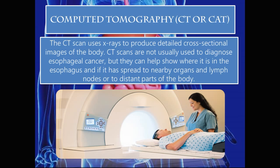Computer tomography (CT or CAT scan): The CT scan uses X-rays to produce detailed cross-sectional images of the body. CT scans are not usually used to diagnose esophageal cancer, but they can help to show where it is in the esophagus, whether it has spread to nearby organs and lymph nodes, or to distant parts of the body.